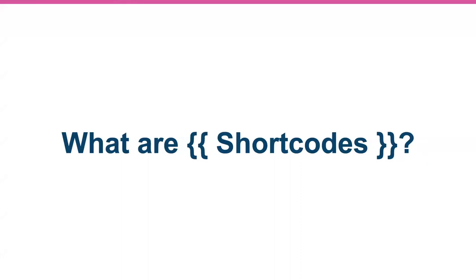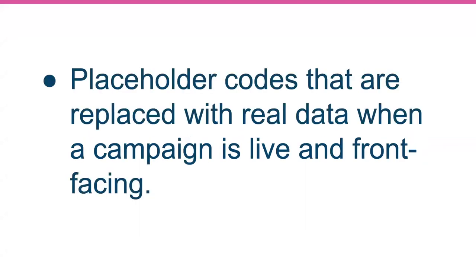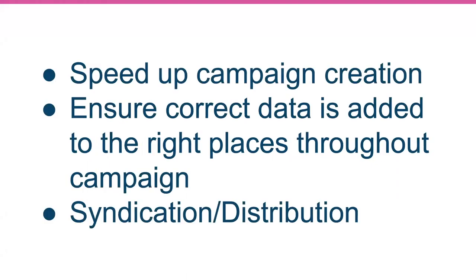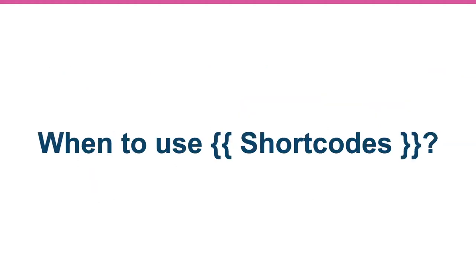Let's jump into the meat of today's tips and tricks. What are short codes? Short codes are placeholder codes that are replaced with real data when a campaign is live and front facing. Why should we use short codes? There are several reasons: to speed up campaign creation, ensure correct data is added to the right places throughout the campaign, and for syndication and distribution. If you're still confused, we have a couple of examples, and then I'll jump into the platform on how you can utilize short codes.